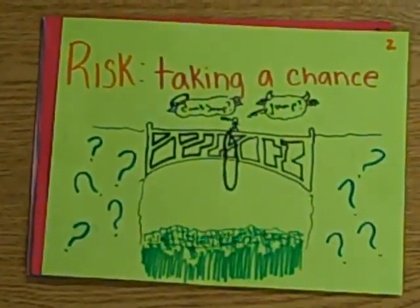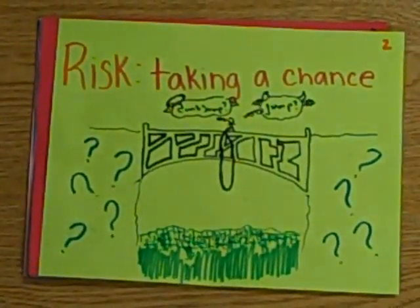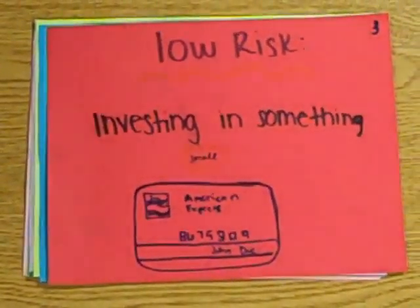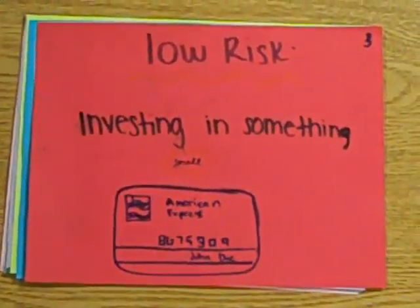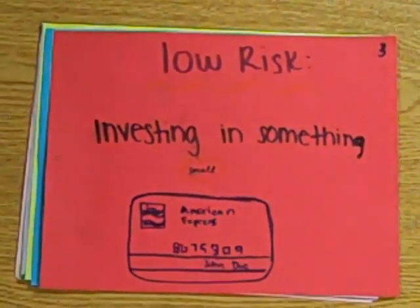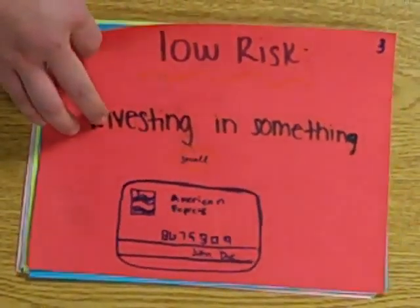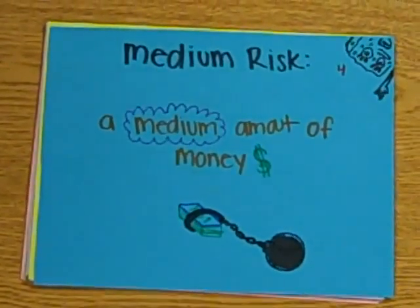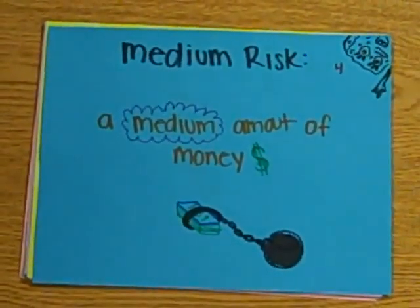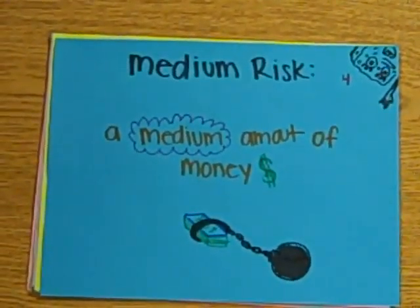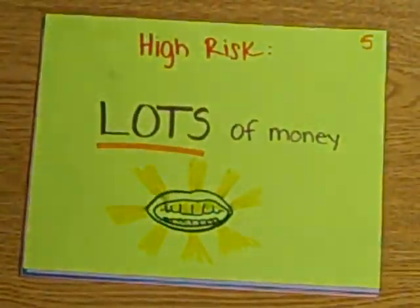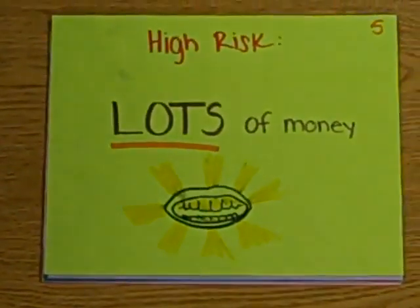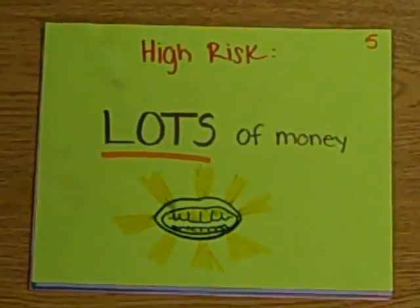Risk is taking a chance on something. There are three types of risk. One is low risk, which is when you invest in something small like a checking account. Medium risk is when you have a moderate amount of money and you put it in something with a moderate amount of risk. And then there's high risk, where you put lots of money into it and you can either lose a lot or gain a lot of money.